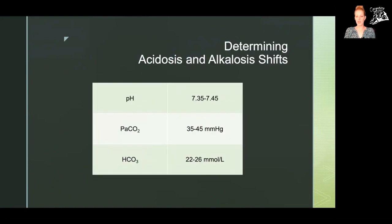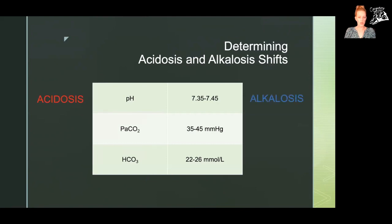When we do not have normal values for these three measurements, a shift below the normal value trends toward acidosis or alkalosis, and a shift above the normal value trends the opposite way — but it's different for each value. With pH, anything below 7.35 is trending toward acidosis, and anything above 7.45 is trending toward alkalosis. For partial pressure of carbon dioxide it is the exact opposite: anything less than 35 is trending toward alkalosis, and anything more than 45 is trending toward acidosis.